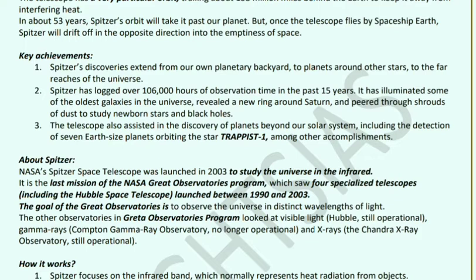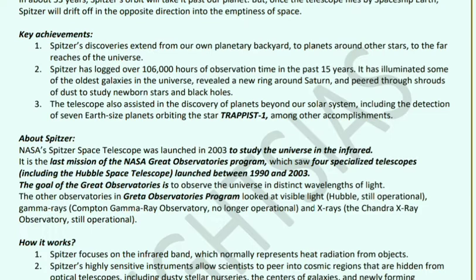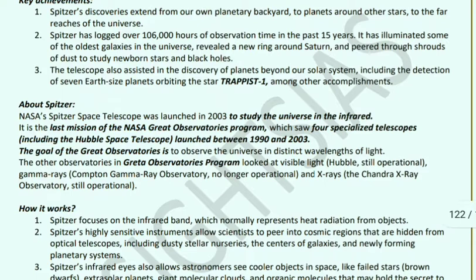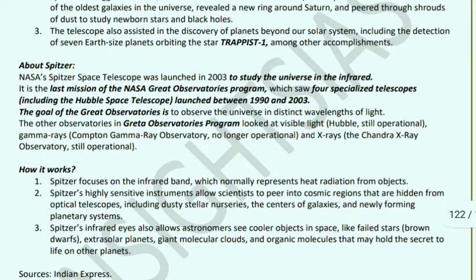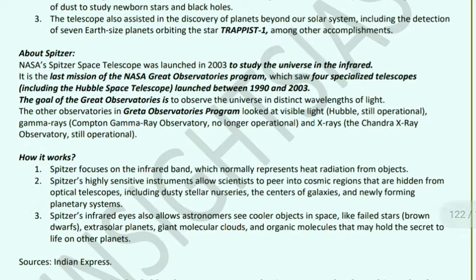Spitzer's discoveries extend from our own planetary backyard to planets around other stars to the far reaches of the universe. It logged 160,000 hours of observation time over 15 years, illuminated some of the oldest galaxies in the universe, revealed a new ring near Saturn, peered through shrouds of dust to study newborn stars and black holes, and helped detect seven Earth-sized planets orbiting the star TRAPPIST-1.